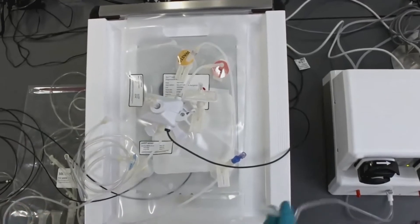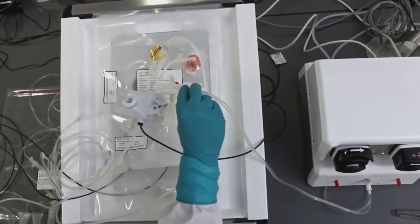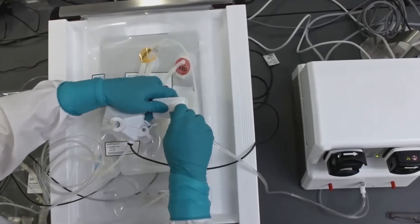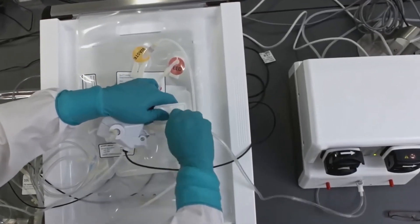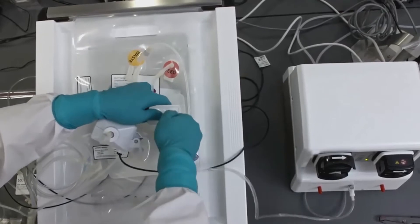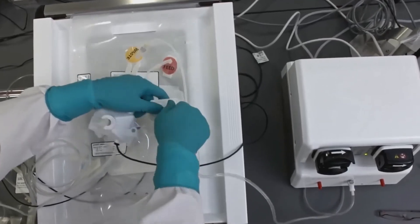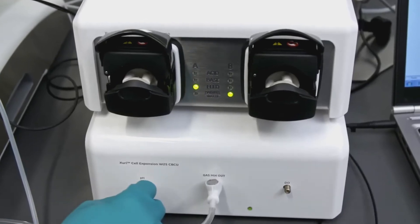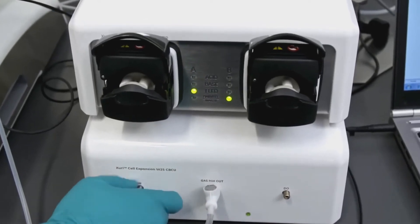You'll then connect your gas mix outline into your air inlet port filter. You'll then connect the pH and DO sensors to the front of the CBCU.